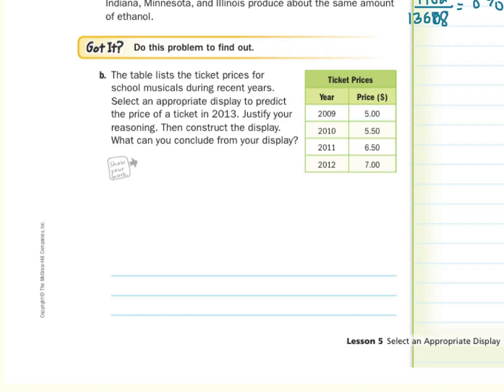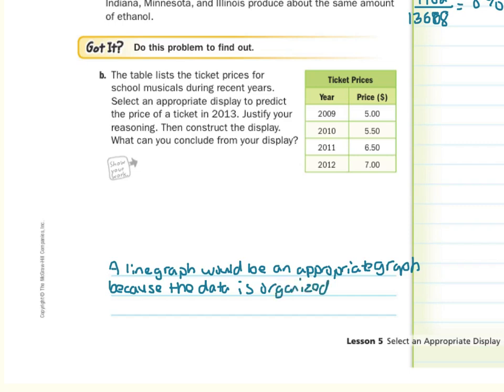And if you look back at page 840, for looking to show change over a period of time, the best graph for this is a line graph. So a line graph would be an appropriate graph because the data is organized changed by time. So the type of information we're given, we have time and money. We want the display to show how the money changes over time. And we're going to analyze it to predict. And so that's how we can conclude that a line graph is the best choice.